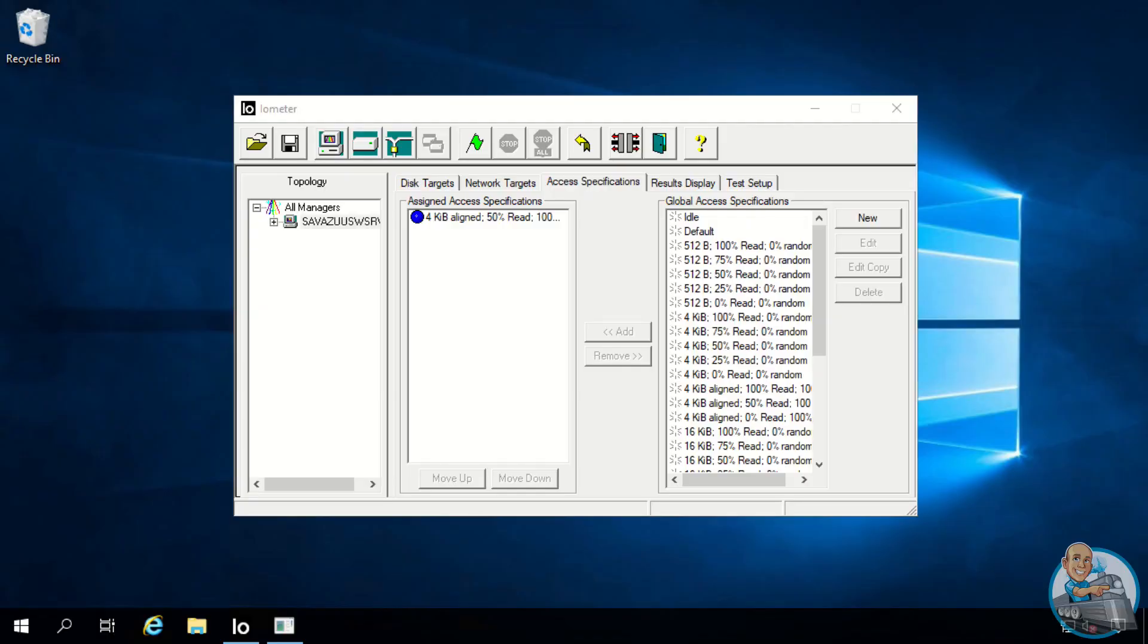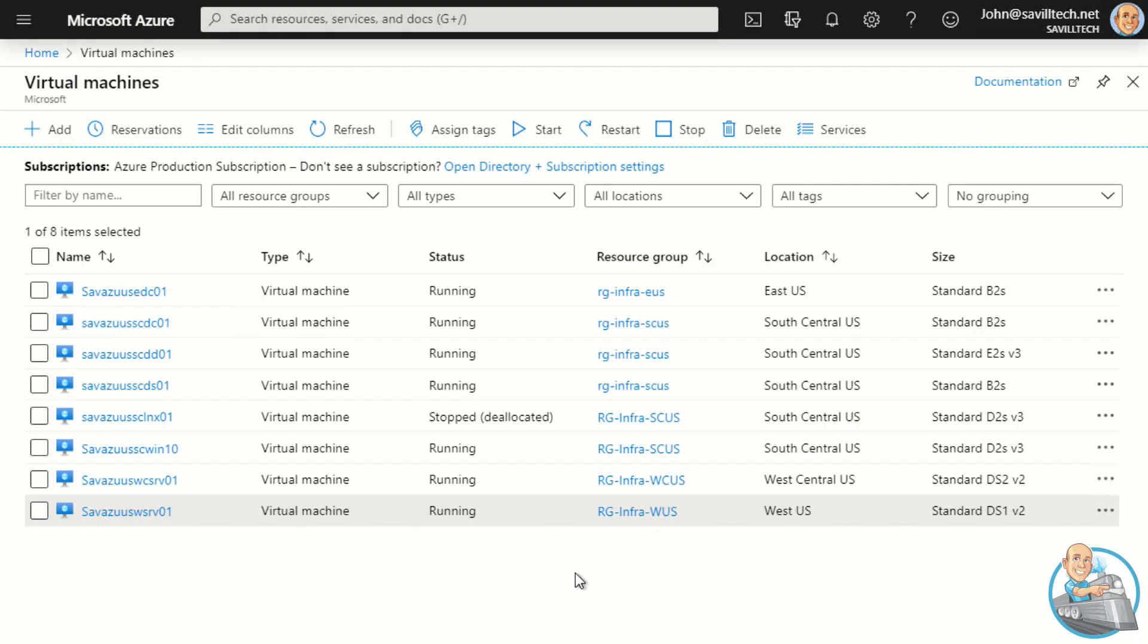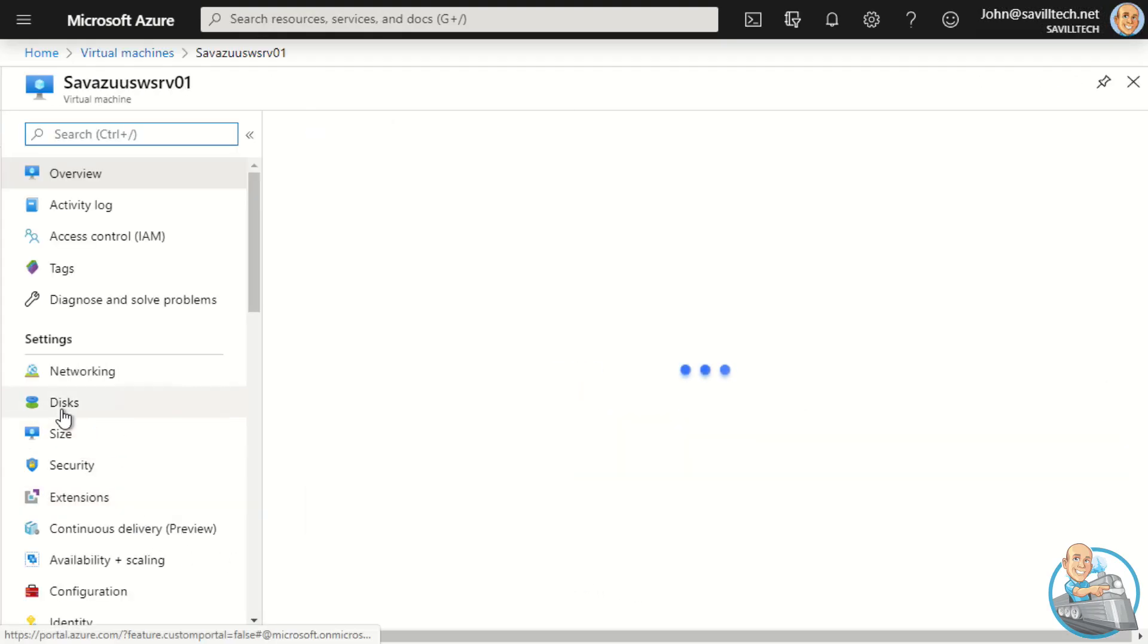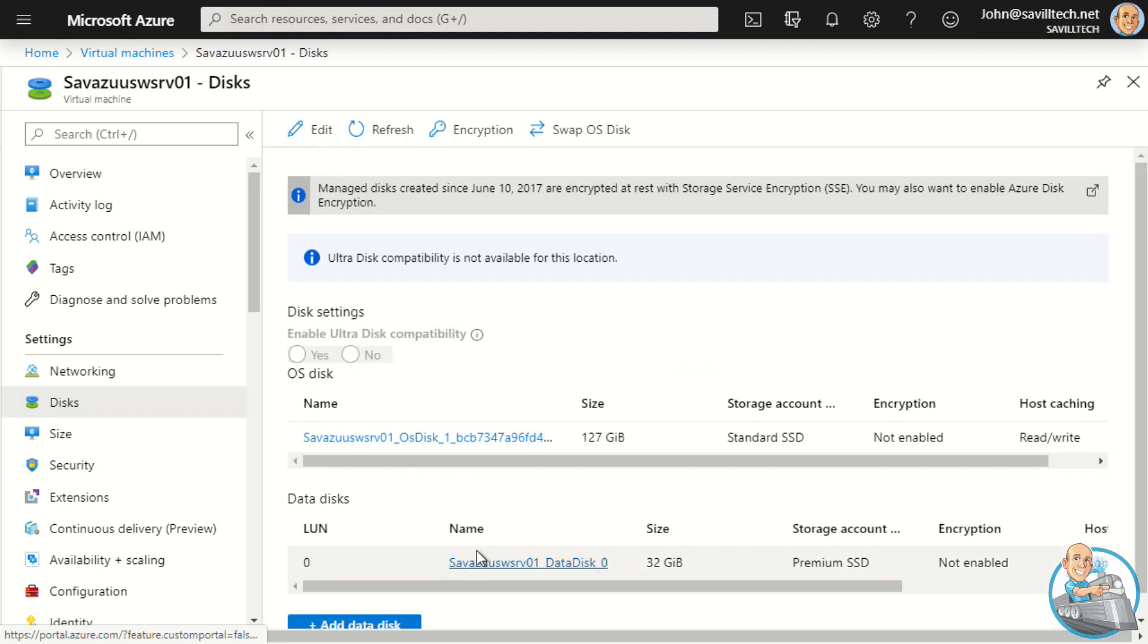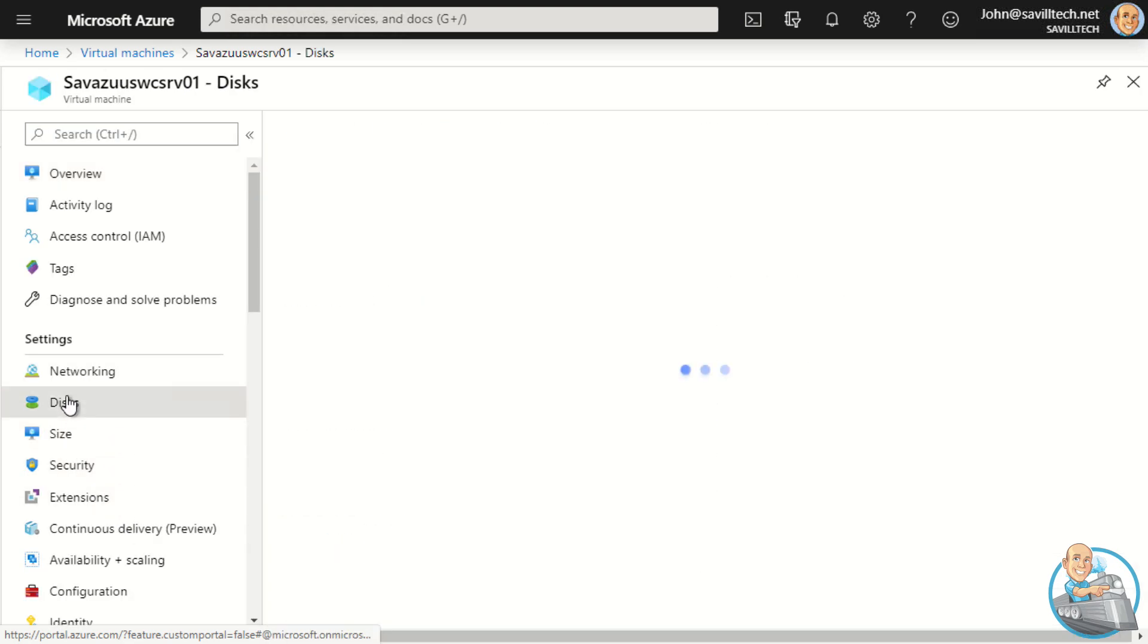I'm going to use the Iometer tool. And what I've configured this for is just a four kilobyte, 50% read, 50% write, random IO. And I'm targeting a data disk I've attached. Now both the data disks are the same. If we look at my West US virtual machine and I look at my disks, you can see I have one data disk that's 32 gigabytes. If I was to look at my other virtual machine, my West Central virtual machine, well it too has a 32 gigabyte disk. So they're the same managed disk. I think that's a P4.